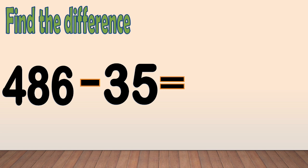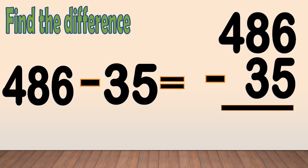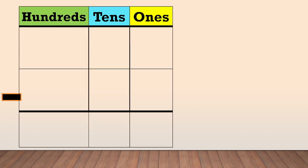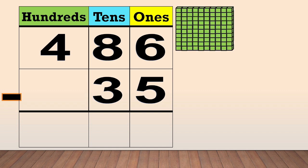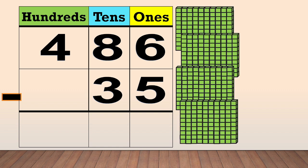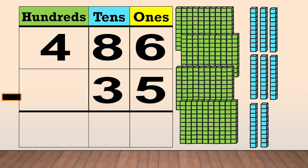Another example. Find the difference. 486 minus 35. First, arrange the numbers in columns. Place the digit of each number in a column based on its place value. 486 has four hundreds, eight tens, and six ones.